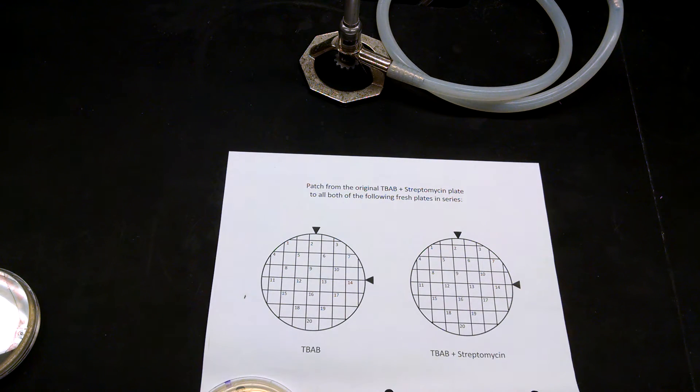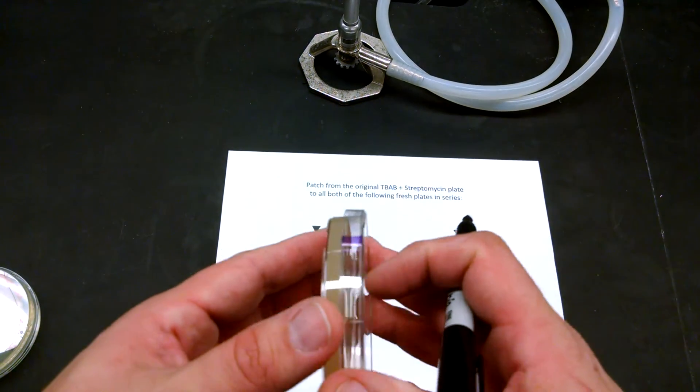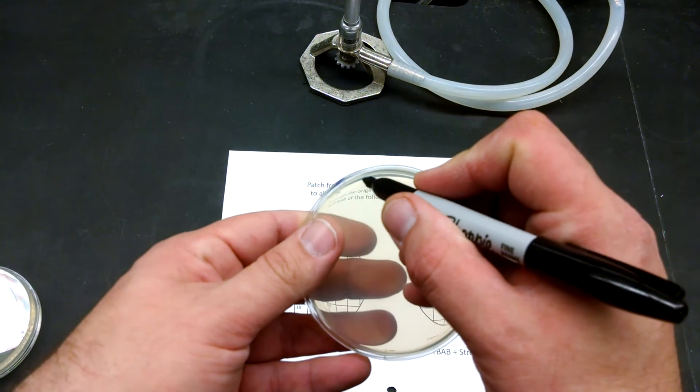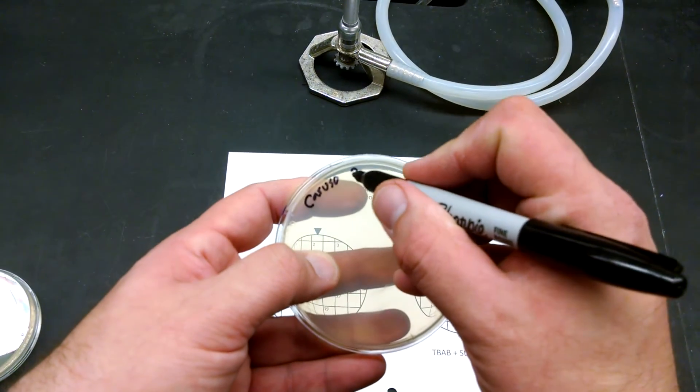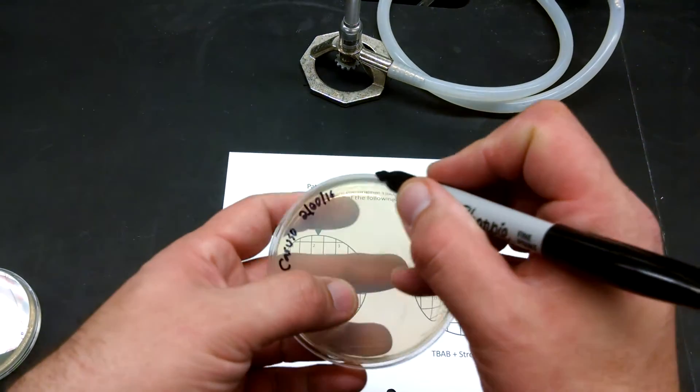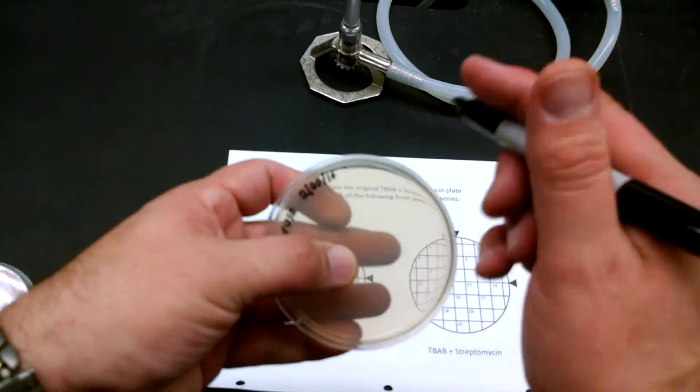Make sure you label them, because remember the way we've identified these is on the lid. Once you take the lid off, you can't tell what's what. So we're going to go ahead and label these. Remember to include your name, the date, and the condition. This one is TBAB.